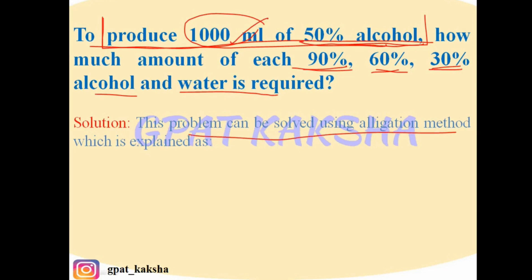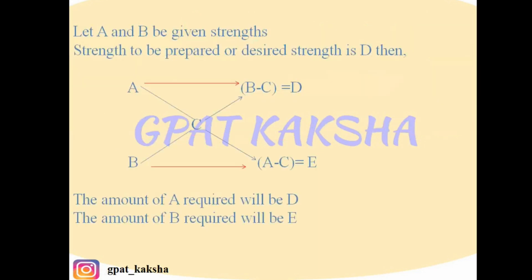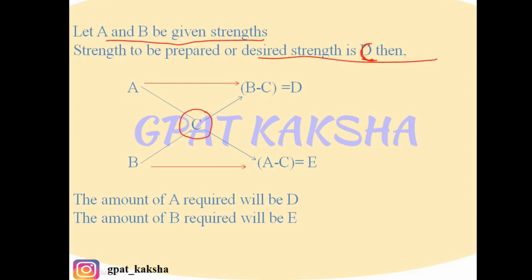This problem can be solved using the allegation method. In this method, imagine we have given strengths A% and B%. These are the strengths we have available, and we have to prepare a desired strength C. We keep the desired strength C in the center — this is the strength which we need to prepare — and A and B are the given strengths on either side.